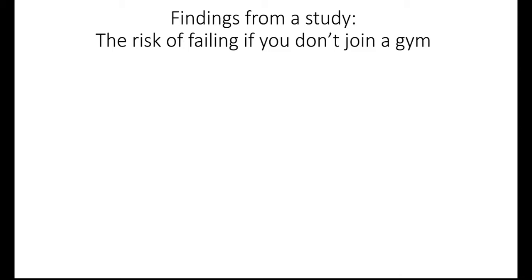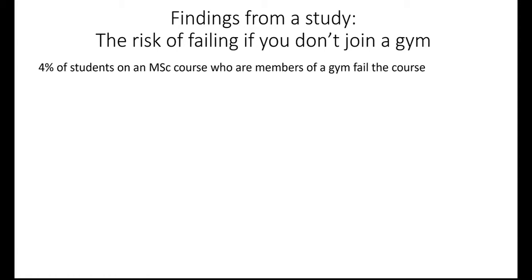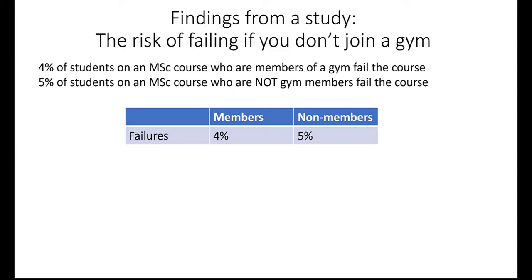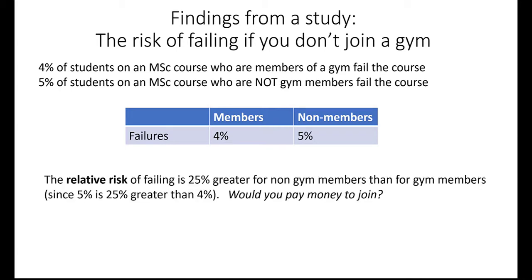Let's suppose a major study of MSc students has been undertaken, which has discovered a relationship between whether or not students join a gym and their exam performance. We find that 4% of students on an MSc course who are members of a gym fail the course, while 5% of students who are not gym members fail the course. The relative risk of failing is 25% greater for non-gym members than for gym members, because 5% is 25% greater than 4%. That's how the risk is generally presented: there is a 25% greater risk of failing the course if you don't join a gym — and that sounds quite startling.